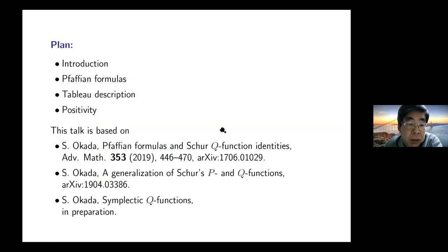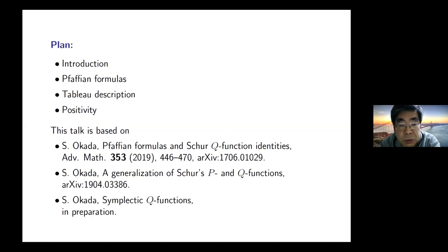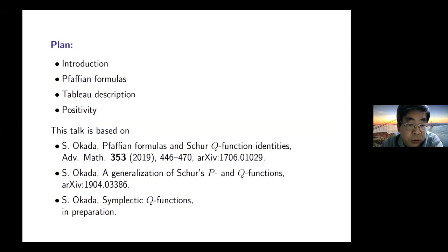This talk is based on three papers. The first introduces new general Pfaffian formulas and uses them to show classical Schur Q Function identities. The second introduces a generalization which can be called a nice variation of the Schur's P Function. The third is the most relevant paper in this talk, but it is still in preparation.